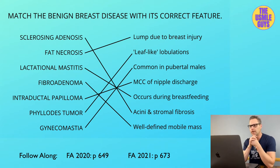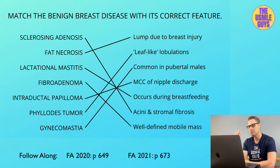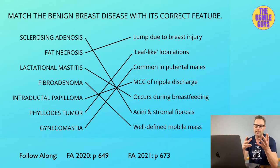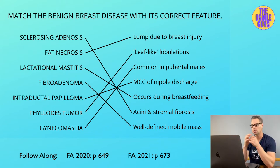Let's start with fibrocystic changes, which are normal in women between 20 and 50 years of age who are premenopausal. This presents with pain that occurs premenstrual or the presence of lumps that show up premenstrual. It's always good to know if this is more common unilaterally or bilaterally — fibrocystic changes tend to occur bilaterally and are also multifocal.